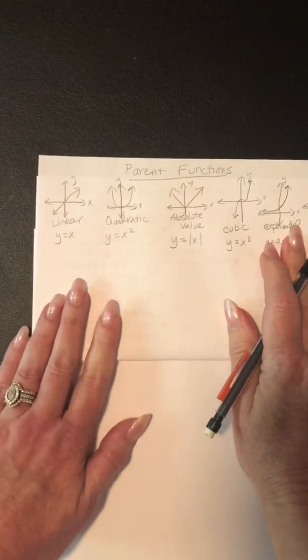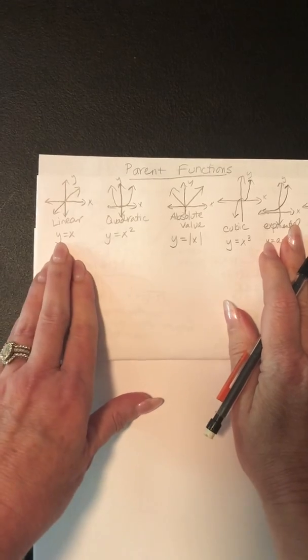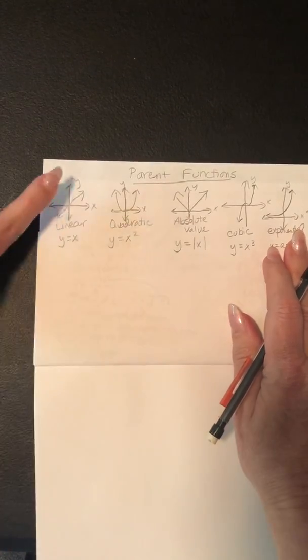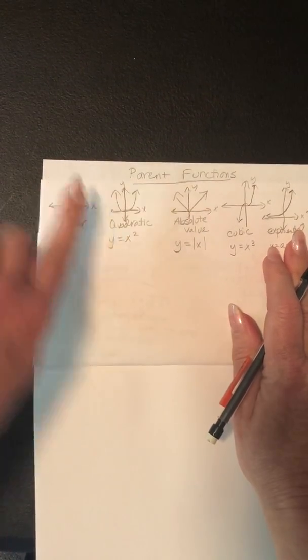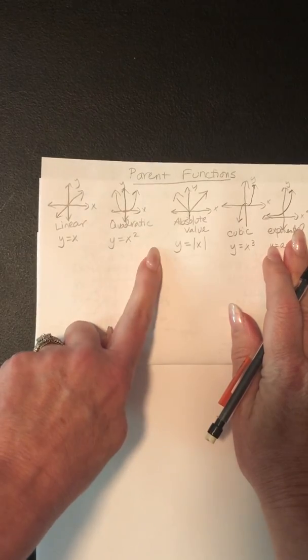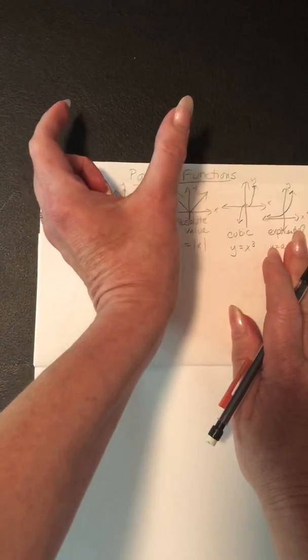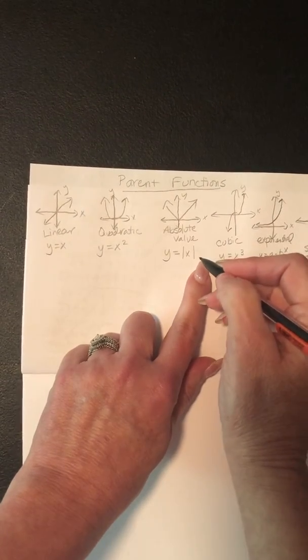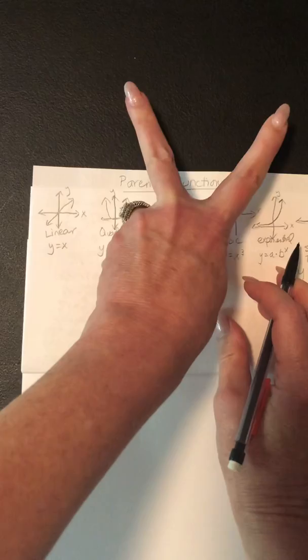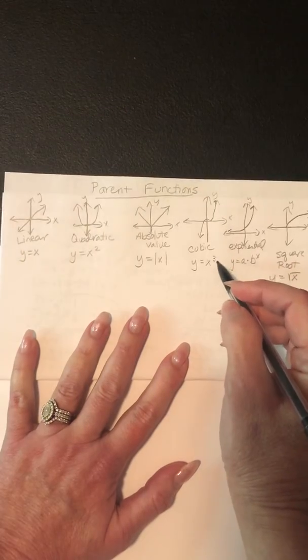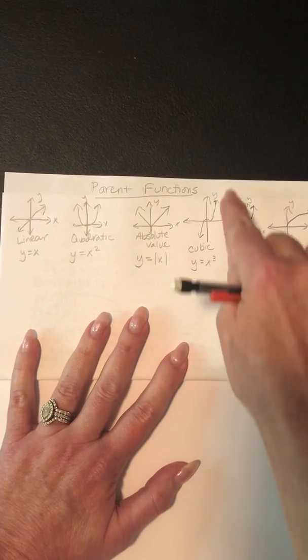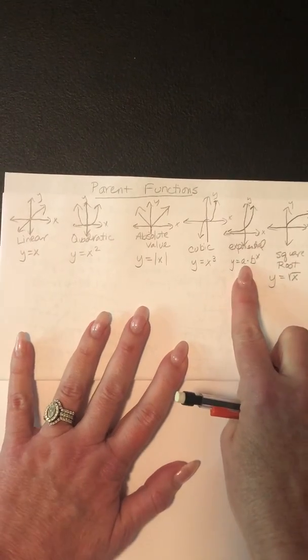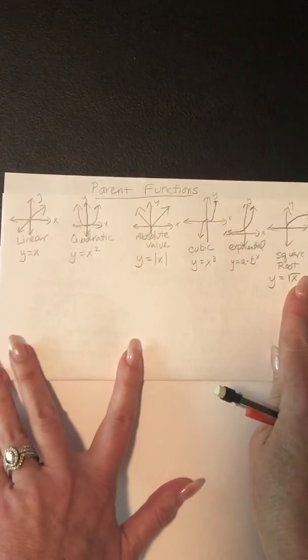And then you go up or down from that. So if this said y equals x plus 2, it would be a vertical shift up 2. If this said y equals x squared plus 2, it would be a vertical shift up 2. If this had a plus 2 on the outside of the absolute value, again, it would shift up 2. This one, if it had a plus 2, again, the curve would shift up 2. Exponential, same thing, and square root, same thing.